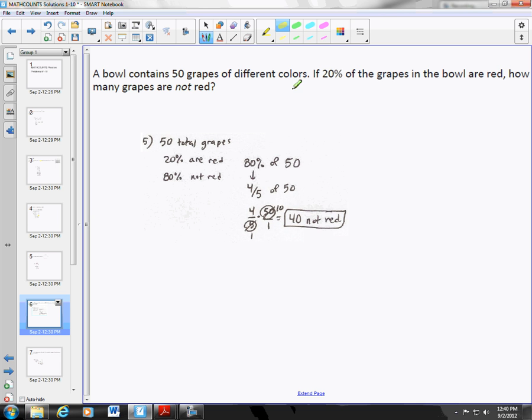Now this one we have 50 grapes of different colors. 20% of the grapes in the bowl are red. How many grapes are not red? So that means we have 20% would be red, 80% would be not red. Now 80% is a common fraction, which is 8 out of 10, or simplified to 4 out of 5. So we're looking for 4 fifths of 50. Of means multiply, so 4 out of 5 times 50. 50 and 5, you simplify along the way. 5 goes into both of those. 50 divided by 5 is 10, 5 divided by 5 is 1, so you're just looking for 4 times 10. So 40 would not be red, and 10 would be red.